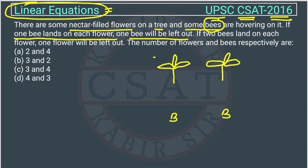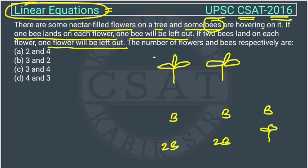If we allot one bee to each flower, then one bee is left out. If two bees land on each flower, one flower will be left unattended. The question asks for the number of flowers and bees respectively.